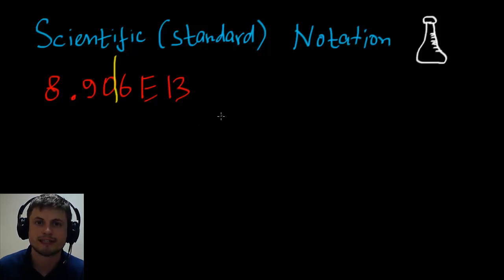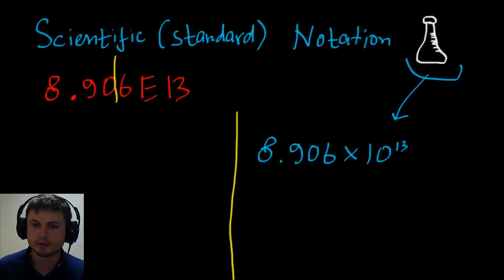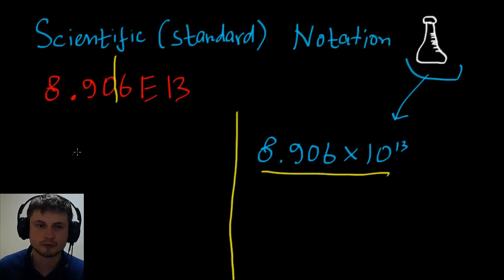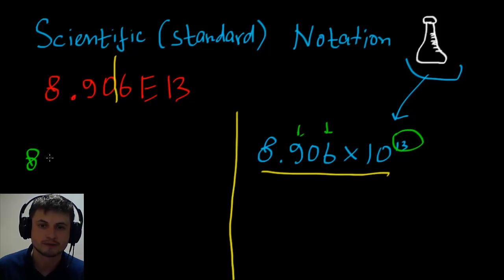Starting with the easier one — scientific notation — 8.906E13 is simply 8.906 times 10 to the power of 13. To convert to decimal, write 8 and follow it with 13 total digits. But since some digits are not zeros — 9, 0, 6 — they count toward the total of 13. So after the 8 we write 9 (12 left), then 0 (11 left), then 6 (10 left), and so on.